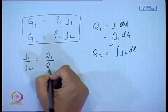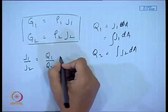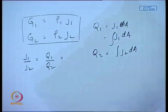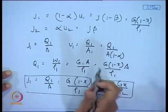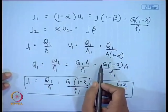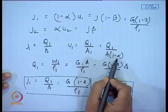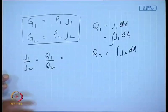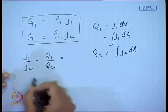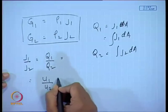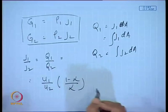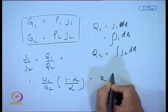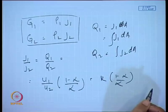j₁/j₂ = q₁/q₂. We can write q₁ = A·(1−alpha)·u₁, so substituting we get j₁/j₂ = (u₁/u₂)·(1−alpha)/alpha. In other words, this is k·(1−alpha)/alpha where k is the slip ratio.